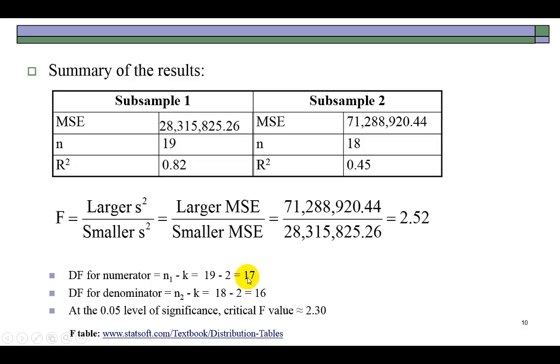And then I go to the F table to find the critical value, 17 degrees of freedom in the numerator and 16 degrees of freedom in the denominator. And it's going to be approximately 2.3.